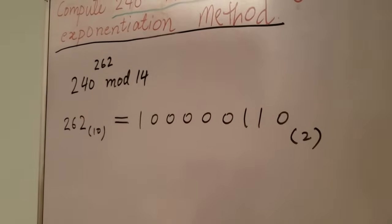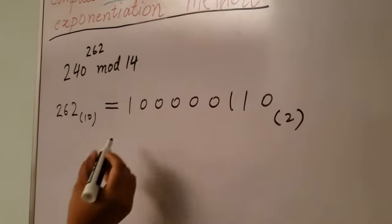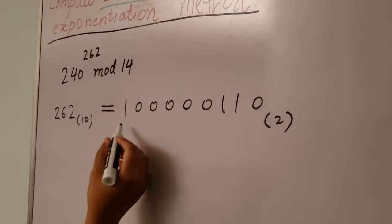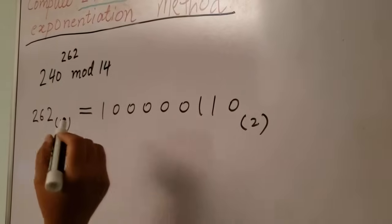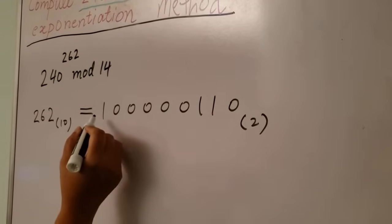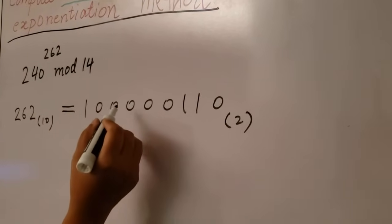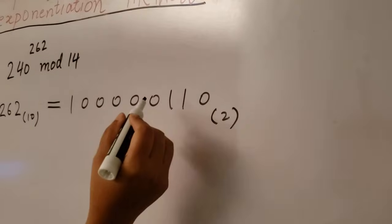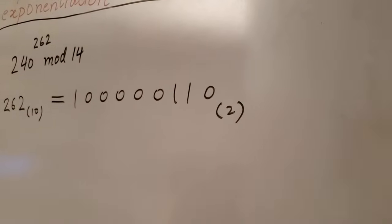Our next step is to count how many binary digits are in this binary number: 1, 2, 3, 4, 5, 6, 7, 8, 9 — there are nine binary digits.